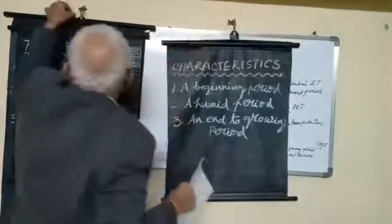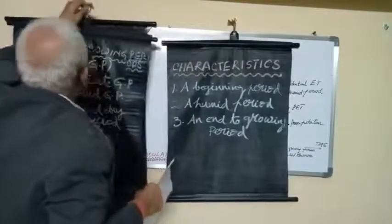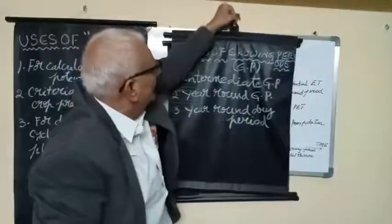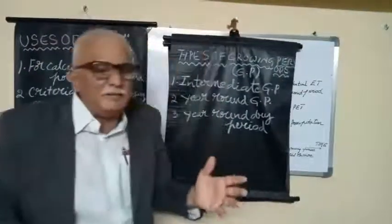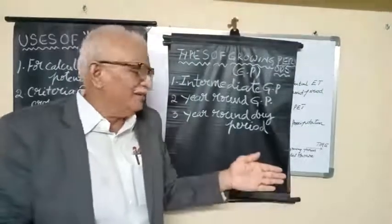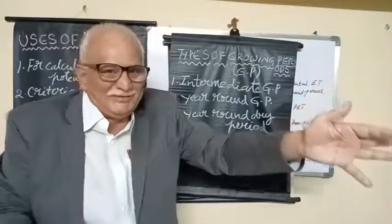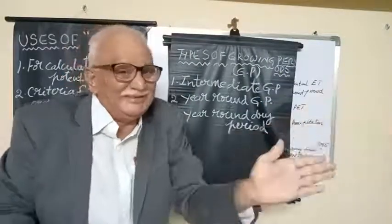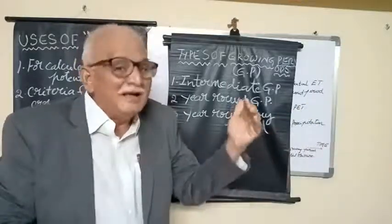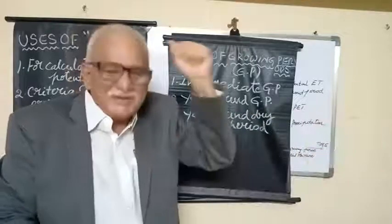What are the types of growing period? Once we estimate the growing period — beginning of the rainy season as the start, end of the rainy season, and after that, the end of the growing period — we can classify different types.